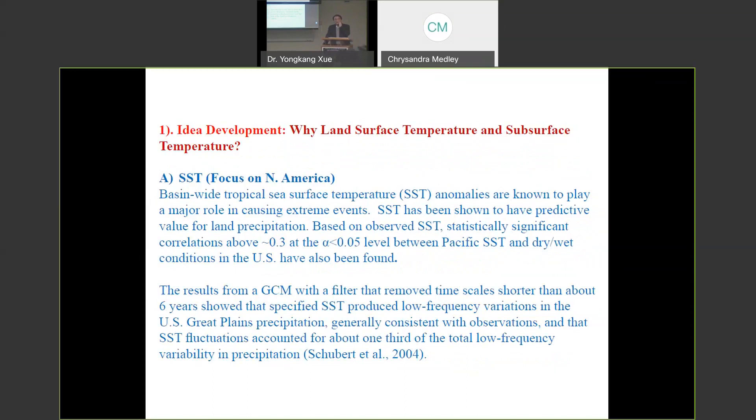So first of all, we talk about this idea development, because most of the atmosphere interaction focus on the surface, like snow, soil, moisture, vegetation. So why we use land surface temperature, subsurface temperature. In the prediction, for subseasonal prediction, this temperature has been played a major role for the such as extreme events like drought and flooding.